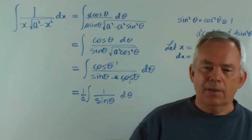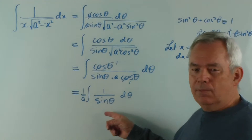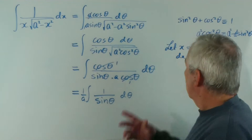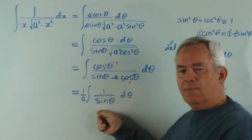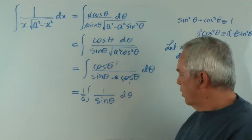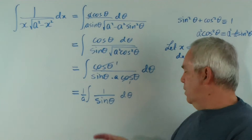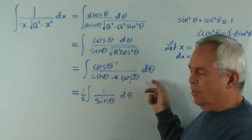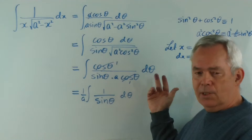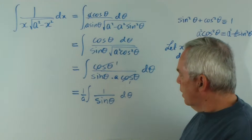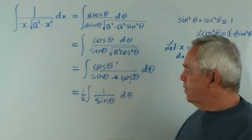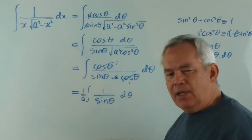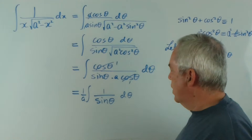Now we encountered this very integral in the last integration. The substitution was different, but this integral was the same. In the last one, we multiplied top and bottom — I think we wrote this as cosecant theta — and we multiplied top and bottom by cot theta plus cosec theta, and it became a logarithm. And I told you there were other ways of doing it, so in this video I'll do it using an alternative method.